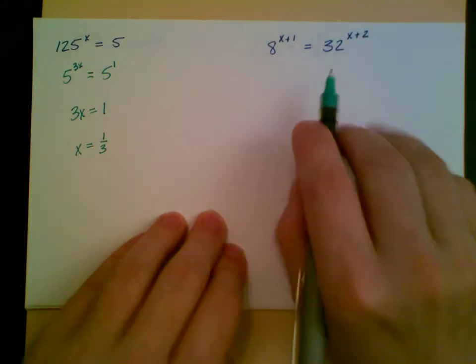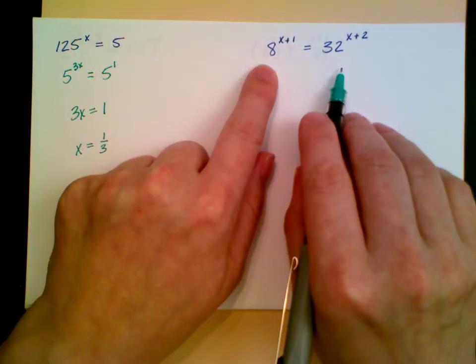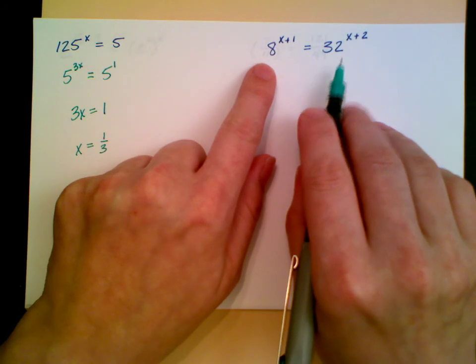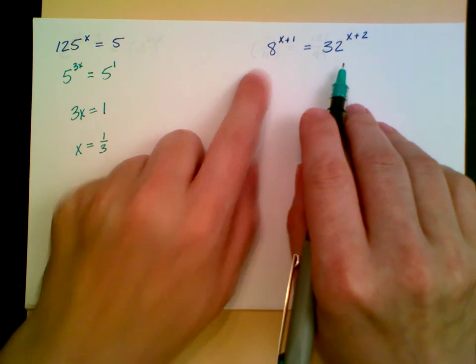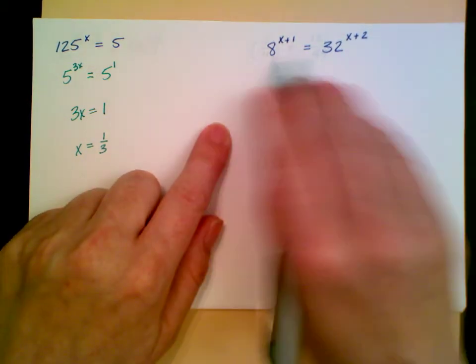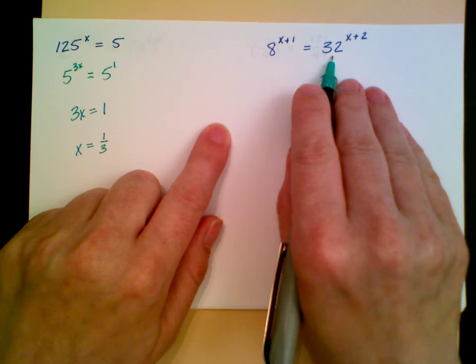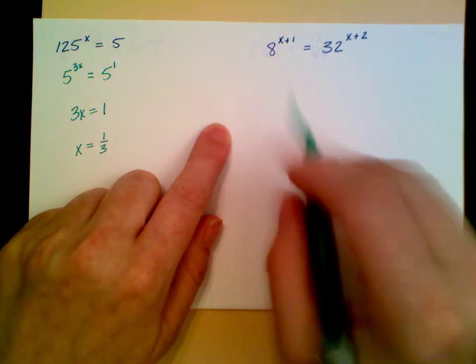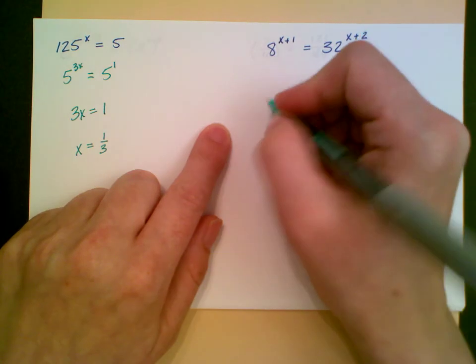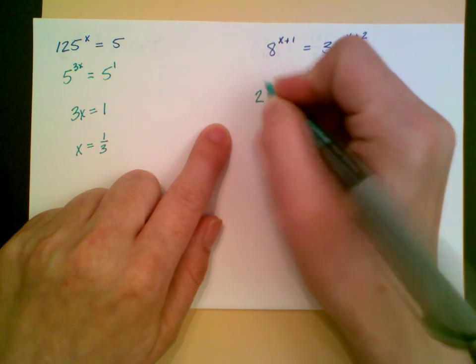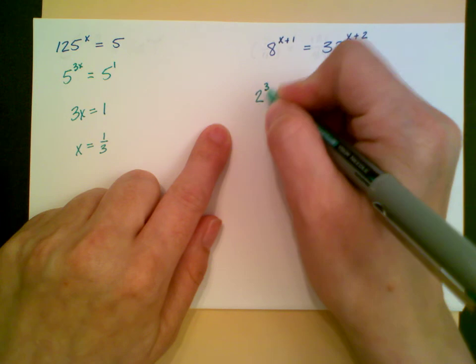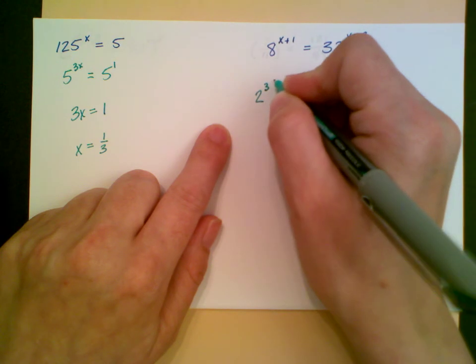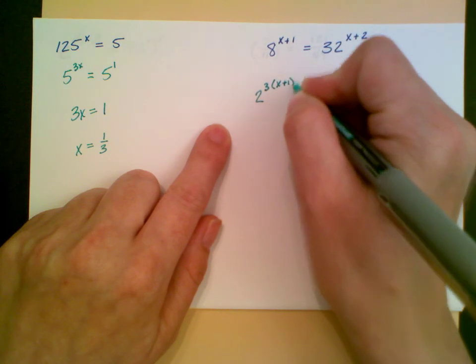Now I have one that's a little more complicated. I just need to be able to write both sides as the same base to something. For the numbers 8 and 32, I can write them both as 2 to the something. 8 is 2 cubed.